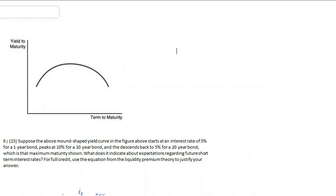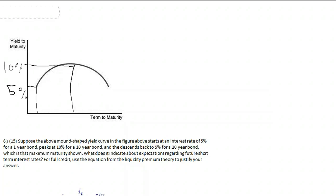In this problem, you have a mound-shaped yield curve. For a 1-year maturity, i.e. a short-term borrowing rate, it's down at 5%. For a 10-year maturity, it's up at 10%. And then for a 20-year maturity, it is back down to 5%. The problem was maybe a little bit ambiguous — you weren't sure whether this is a 1-year maturity or a 1-day maturity. It doesn't matter; you can interpret it however you want. For simplicity, I'm going to interpret this as a 1-year maturity.